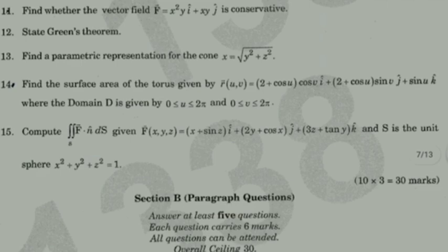Compute the double integral over S of F·n·dS, given vector F(x,y,z) = (x + sin(z))·i + 2y·cos(x)·j + (3z + tan(y))·k. The question is F·n, where vector F dotted with vector n. S is the unit sphere x² + y² + z² = 1.